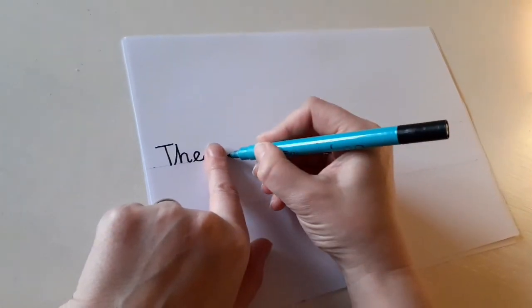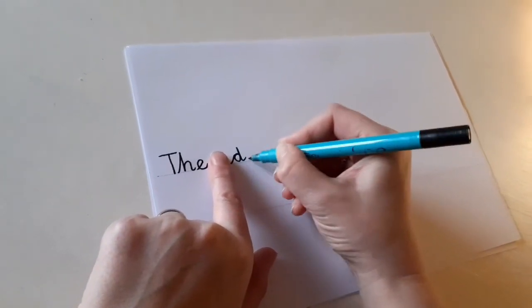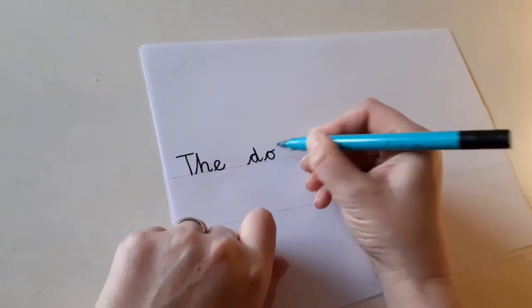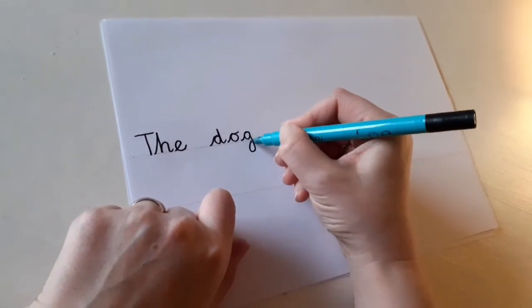We're going to do dog, which is our easy word because we can sound it out. D, o, g. Dog. The dog.